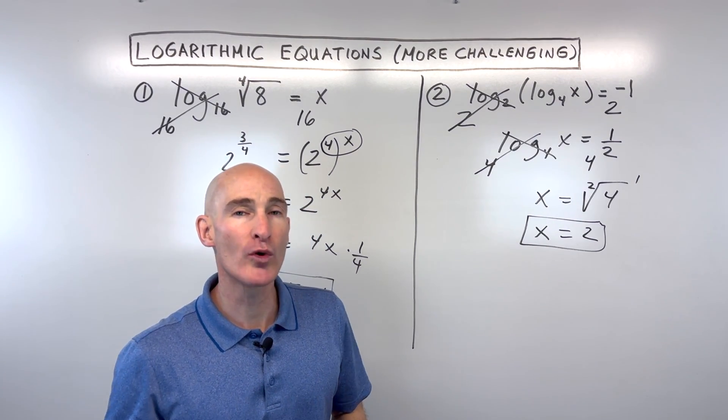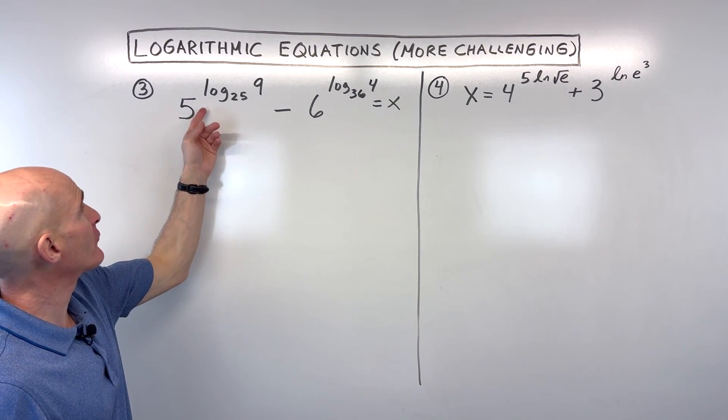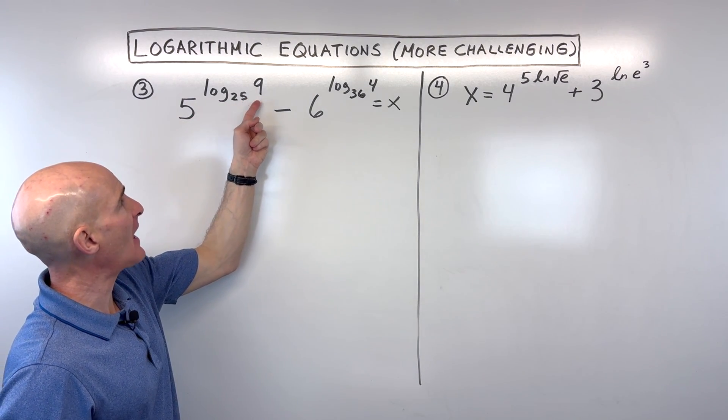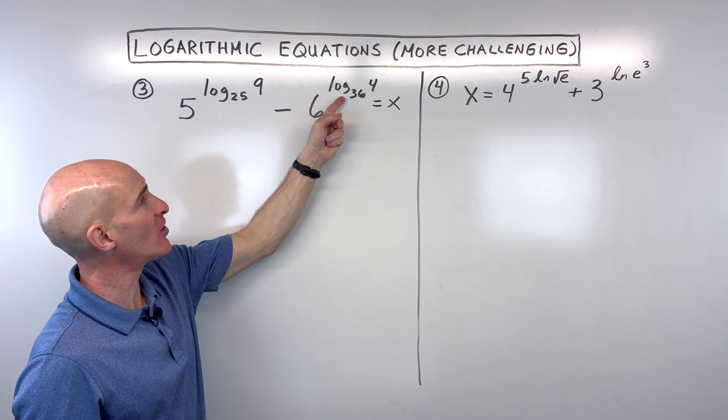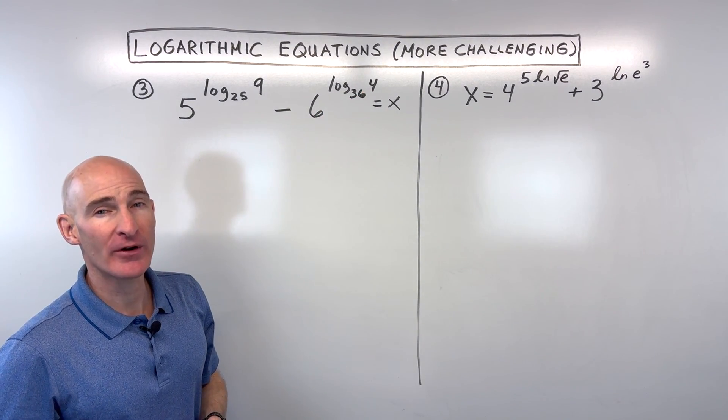Let's take a look at two more examples. Let's take a look at number 3 now. So we've got 5 raised to the log base 25 of 9 minus 6 raised to the log base 36 of 4 equals x. How would you solve for x in this problem?